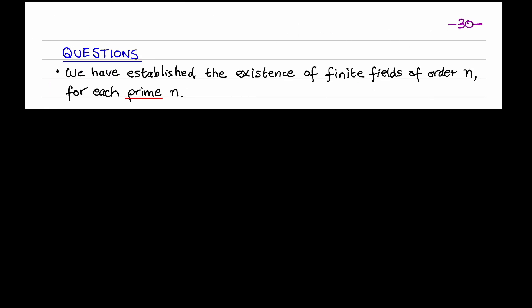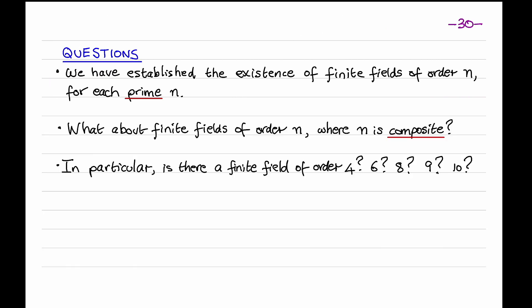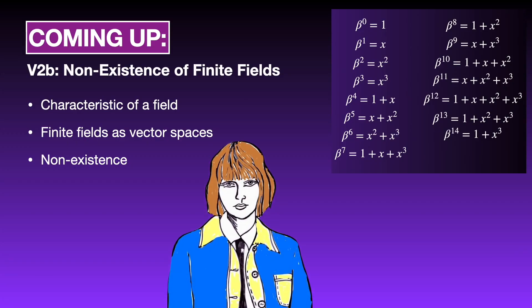We have established the existence of finite fields of order n for each prime number n — this was the field of integers modulo n, which has order n because its elements are the numbers from 0 to n minus 1. The next interesting question is: do there exist finite fields of order n when n is composite? In particular, is there a finite field of order 4, order 6, order 8, order 9, or order 10? In the next lecture, we'll define the characteristic of a field and use that to prove the non-existence of finite fields with a certain number of elements.